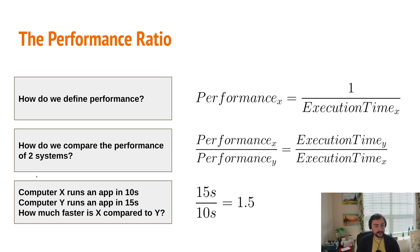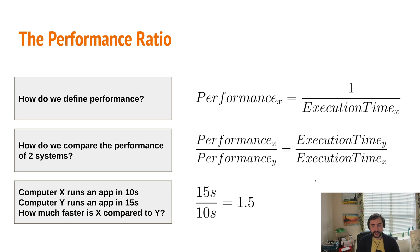As a practical example: computer X runs an application in 10 seconds and computer Y runs it in 15 seconds. To find how much faster architecture X is compared to Y, we take execution time of Y over execution time of X — 15 over 10 — giving us a ratio of 1.5. So architecture X is 1.5 times faster at running that application. Another way to think about it: in the time it takes to run our program on architecture Y once, we could have run it 1.5 times on architecture X.